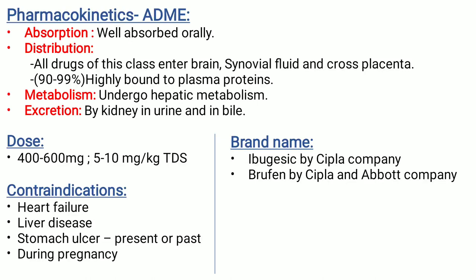Dose is 400–600 mg, 5–10 mg per kg, 3 times a day. Contraindications: heart failure, liver disease, stomach ulcer (present or past), and during pregnancy — it is not used. Brand names are Igesic by Cipla Company and Brufen by Cipla and Abbott company.